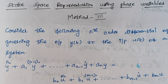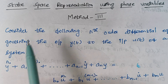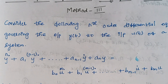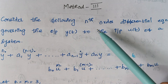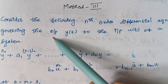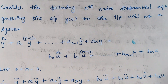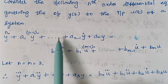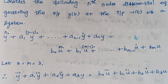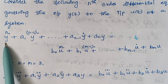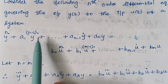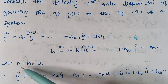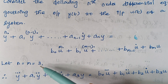Hello viewers, I am Kaushalya. Today we are going to discuss the topic of state space representation using the phase variables method 3. Here, we are considering an nth order differential equation whose input is u(t) and the respective output is y(t). This is our differential equation, where y refers to the output and u refers to the input. The output side consists of n terms and the input side consists of m terms. Initially, we are selecting n equal to m equal to 3.